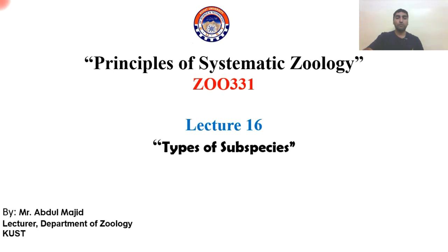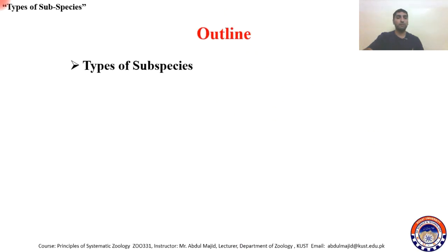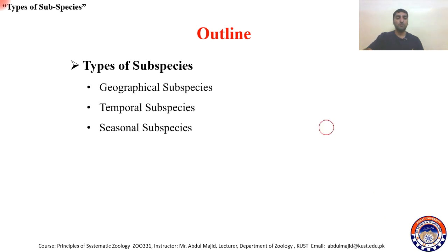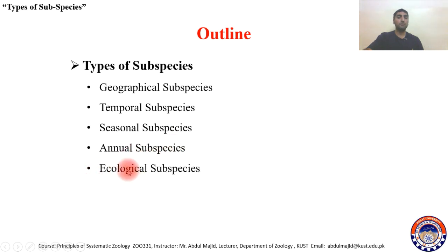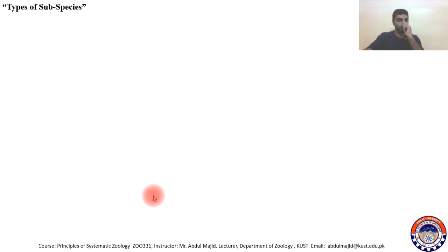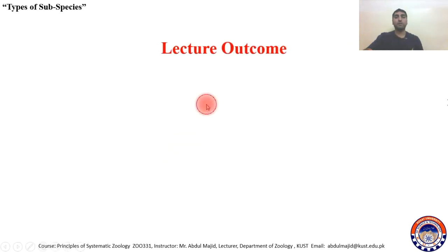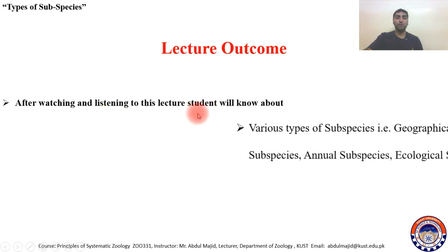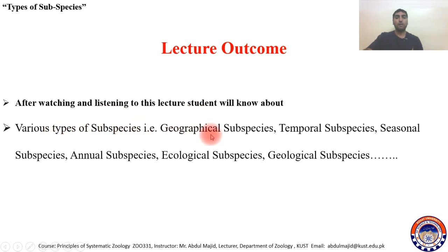Welcome to lecture number 16. Today we will discuss types of subspecies. The outline covers geographical subspecies, temporal subspecies, seasonal subspecies, annual subspecies, ecological subspecies, geological subspecies, and their examples. By watching this lecture, students will know about various types of subspecies and their examples.